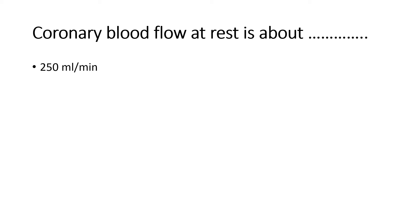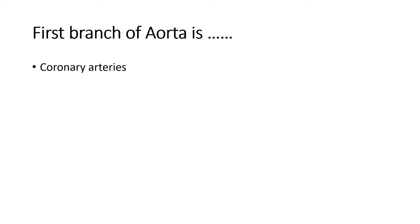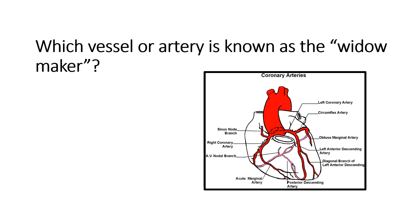The next question: what is the first branch of the aorta? The answer is the coronary arteries. The last question: which vessel or artery is known as the widow maker?